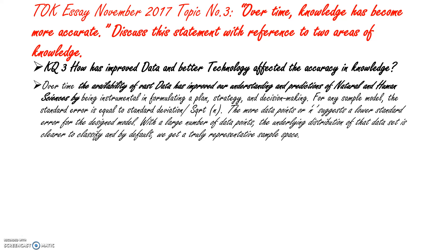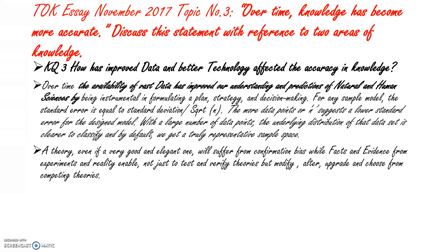With a large number of data points, the underlying distribution of that data set is clearer to classify by default — we get a truly representative sample space. A theory, even if a very good and elegant one, will suffer from confirmation bias, while facts and evidence from experiments in reality enable us not just to test and verify theories, but to modify, alter, upgrade and choose from competing theories.